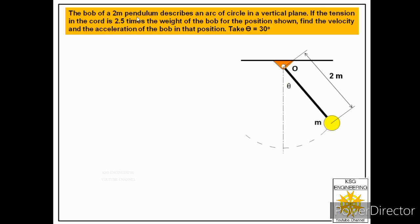The bob of a two-meter pendulum describes an arc of a circle in a vertical plane. If the tension in the chord is 2.5 times the weight of the bob for the position shown, find the velocity and the acceleration of the bob in that position. Take 30 degrees as the angle of the pendulum with the vertical. The pendulum makes 30 degrees with the vertical, and the mass of the bob is given as m, with the length of the pendulum being 2 meters.